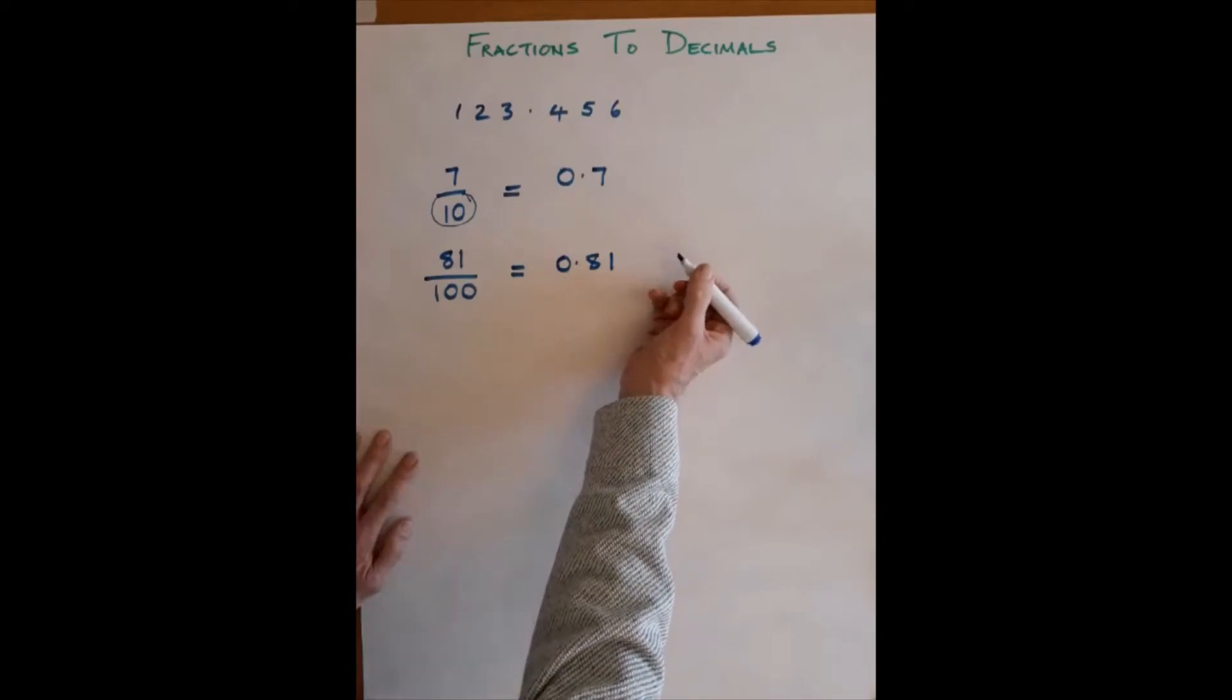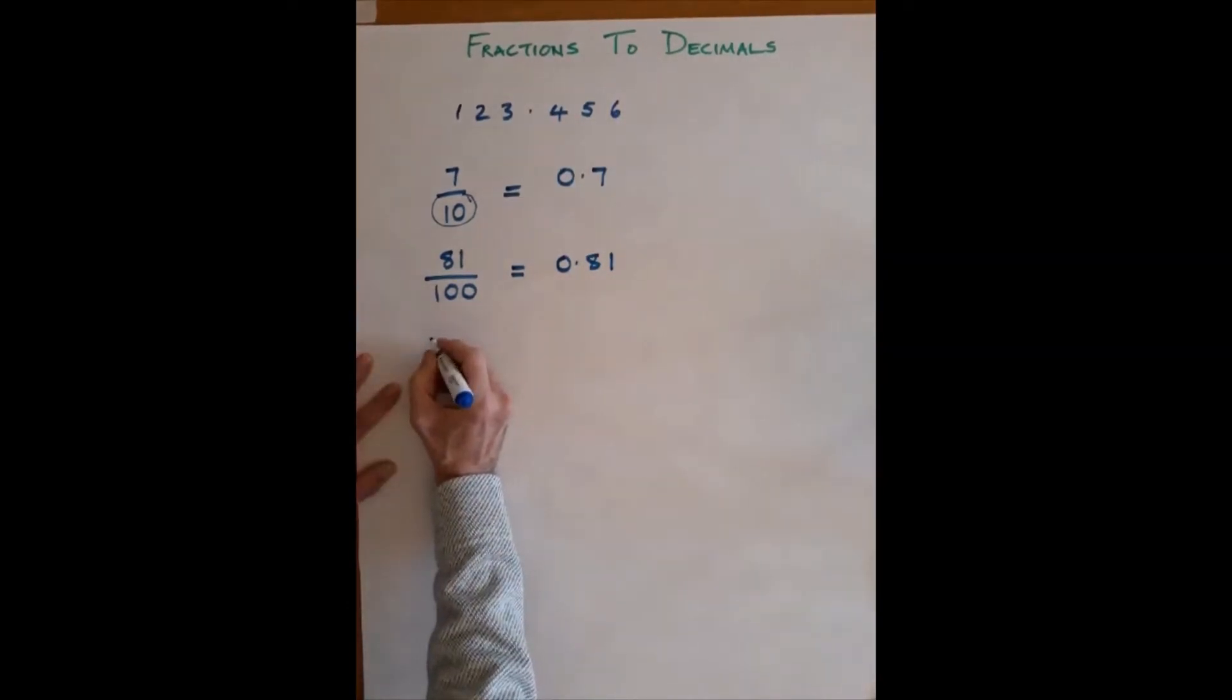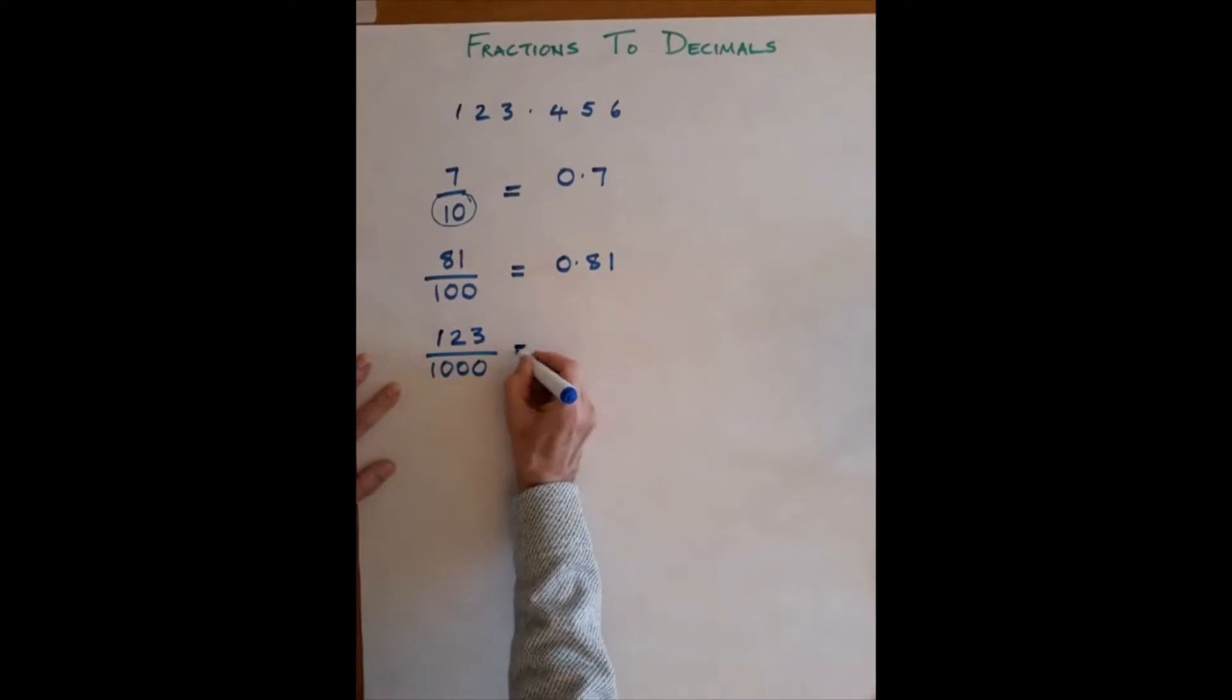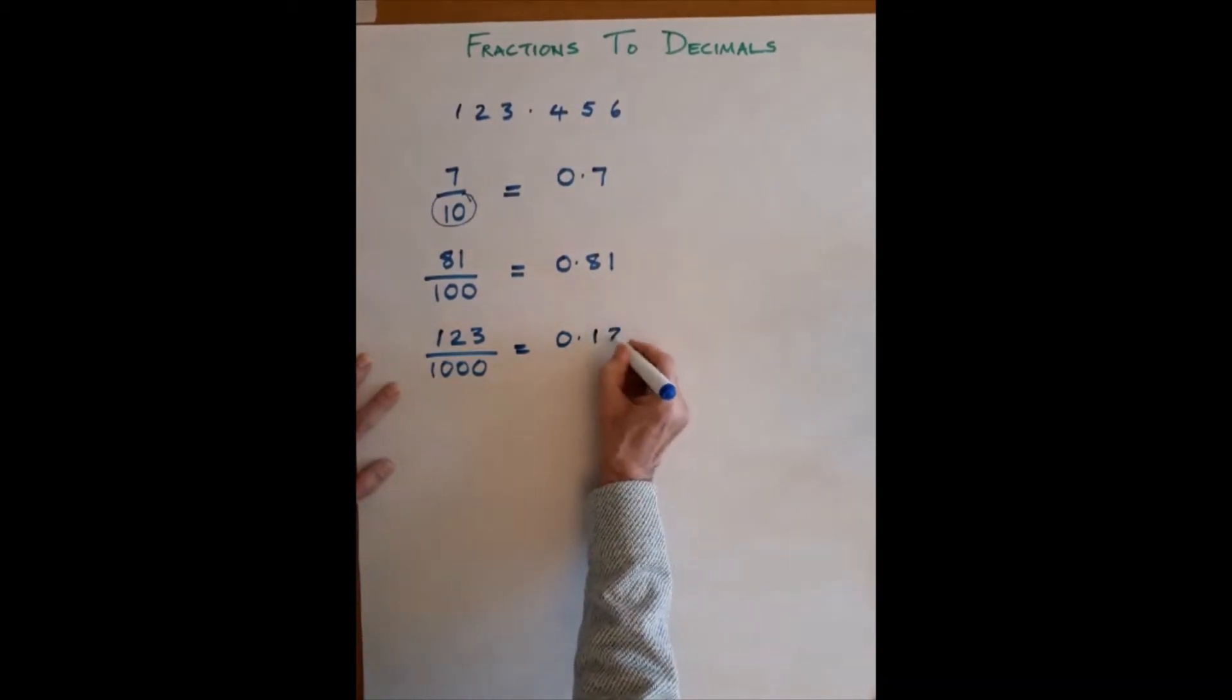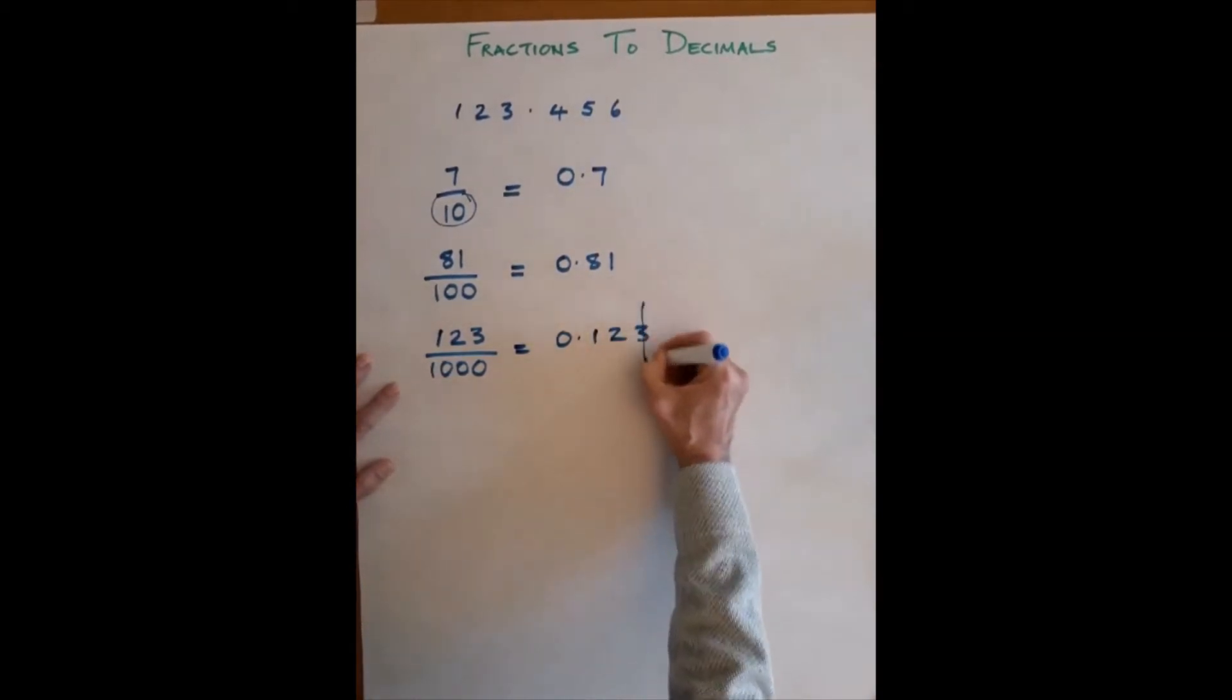Pick off a different one. Suppose I had 123 over 1000. Then the digit that's furthest to the right, the 3, is going to go in the column of thousandths. So 0.point, and that 3 needs to go in that third column, 1, 2, 3. So this one sits in the thousandth column.